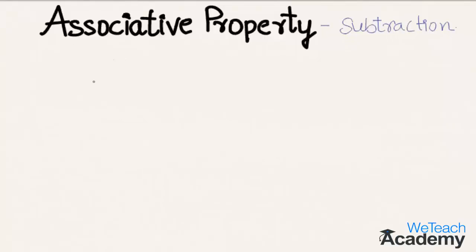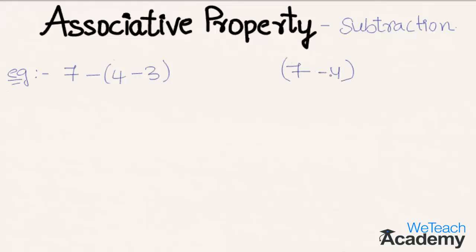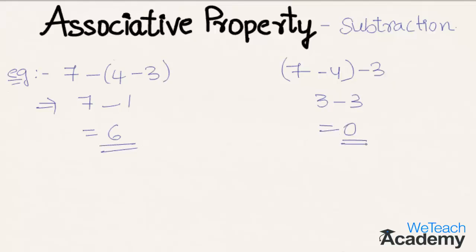Let me explain associative property of subtraction with an example. If we consider (seven minus four) minus three and change the grouping to seven minus (four minus three): on the left hand side, seven minus four is three, and three minus three equals zero. On the right hand side, four minus three is one, and seven minus one equals six. Since both values are not equal, associative property of subtraction is not possible.